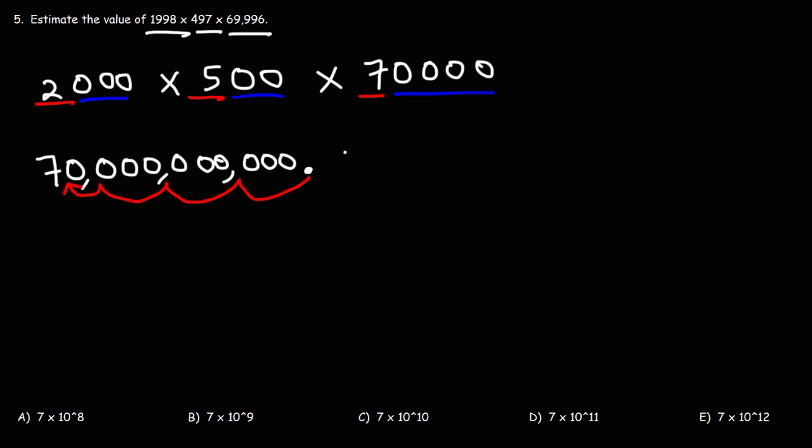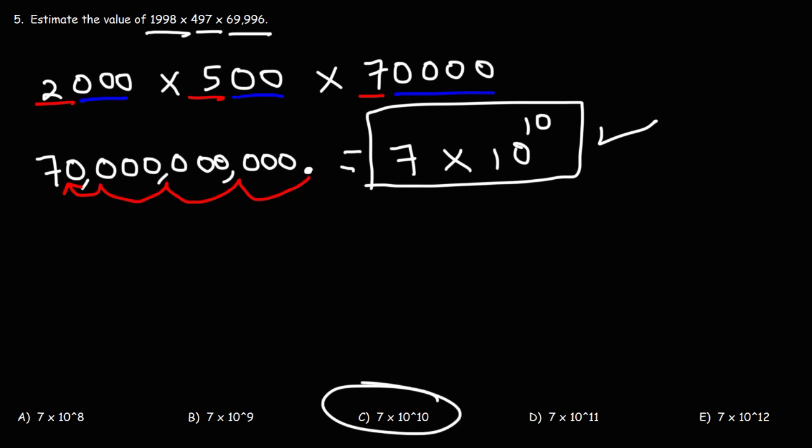So, we could say this is equal to 7 times 10 to the 10 because we moved the decimal 10 units to the left. And so, this is the final answer in scientific notation. That's how you can represent 70 billion. It's 7 times 10 to the 10, which means that answer choice C is the correct answer. So, now you know how to multiply large numbers and how to estimate the answer using this process.